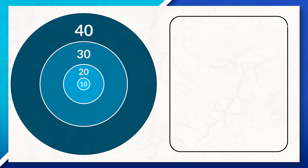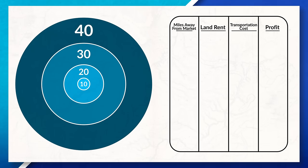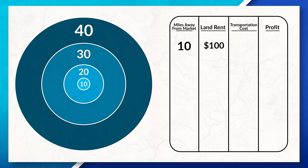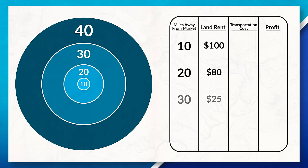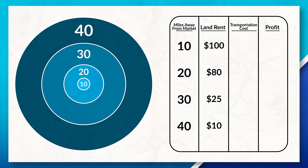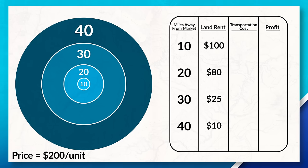To make sure you're understanding this, let's look at a hypothetical situation. Pretend that you are a farmer looking to figure out where to locate your farm. If you locate 10 miles away from the market, land will cost you $100 a month. 20 miles away, it'll only be $80 a month. 30 miles away, $25 a month. Or 40 miles away, $10 a month. Right now you can sell your product for $200 a unit.